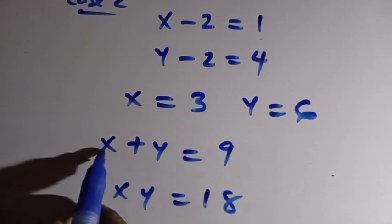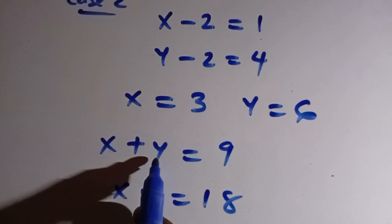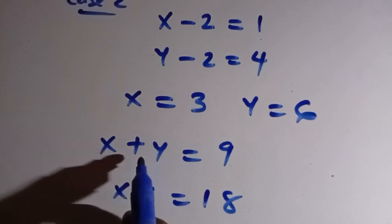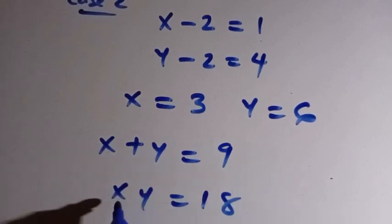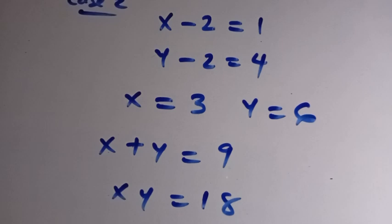So from what we get, if x equals to 6 and y equals to 3, so 6 plus 3 here, that is 9, and 6 times 3, that is 18.